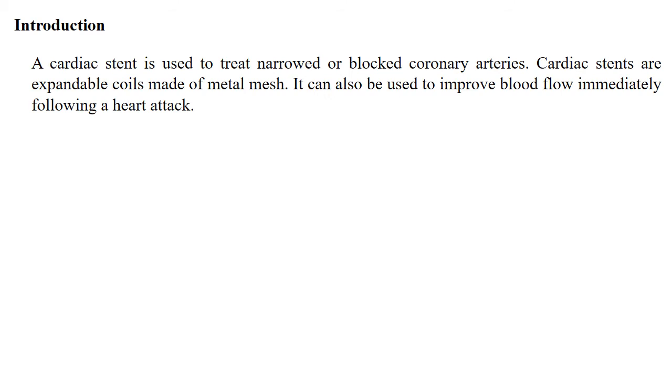This damages our heart muscles because these coronary arteries deliver oxygen-rich blood to our heart muscles. A cardiac stent is used to treat narrowed or blocked coronary arteries, and it can also be used to improve blood flow immediately following a heart failure. Cardiac stents are an expandable coil made up of metal mesh.